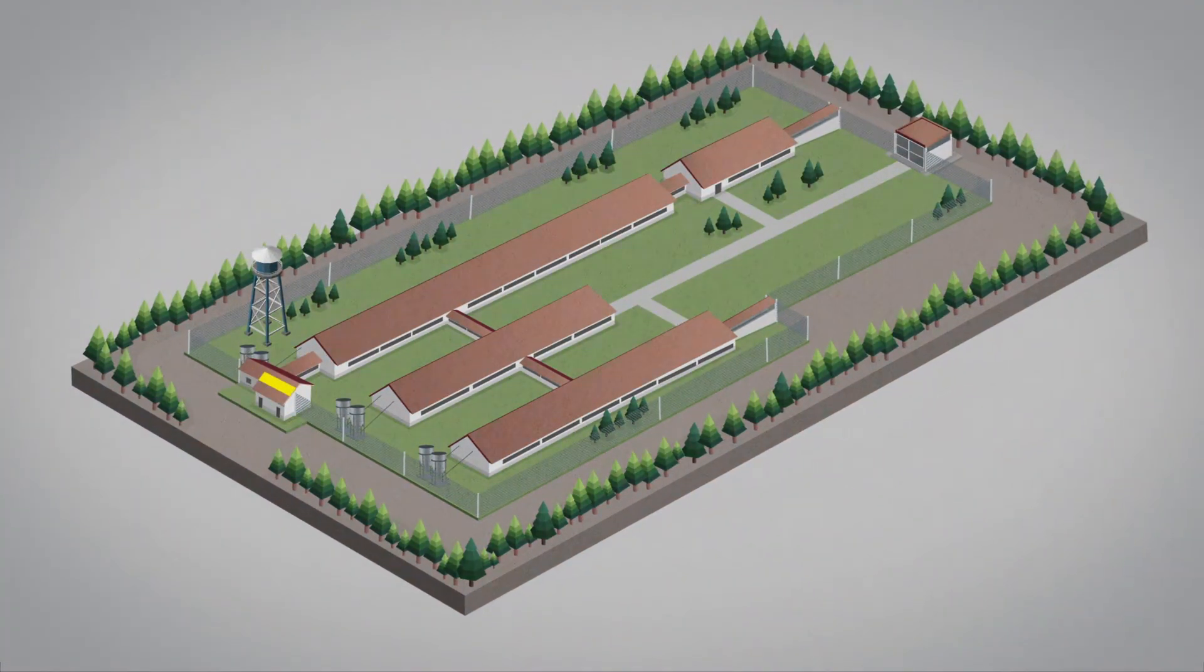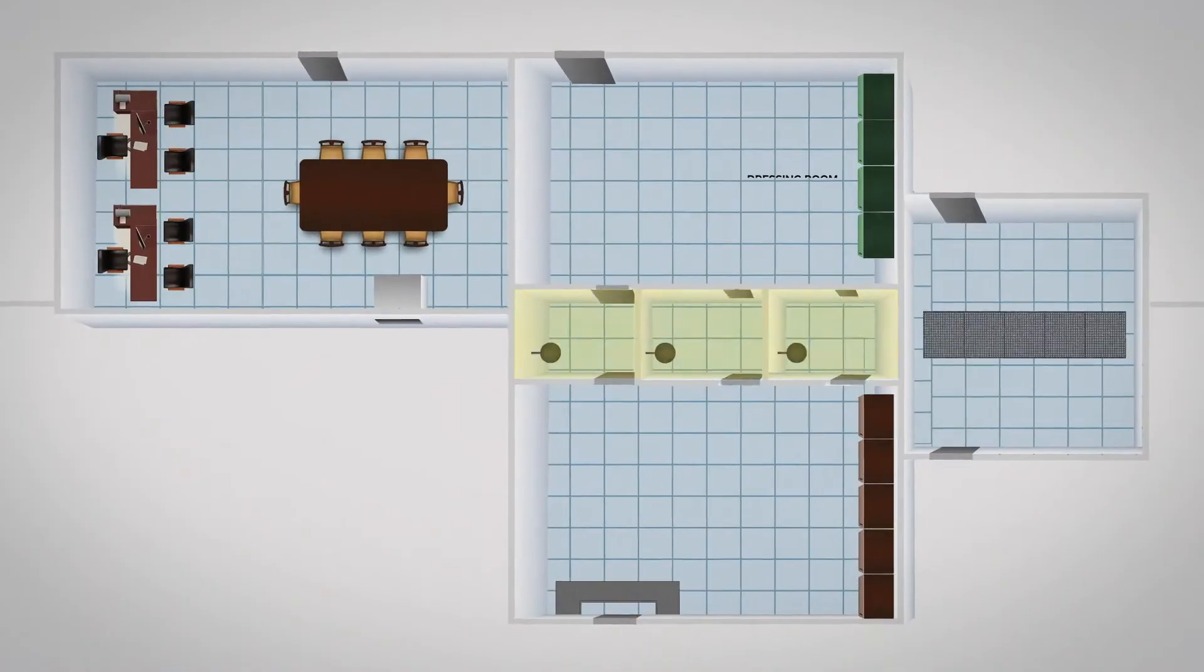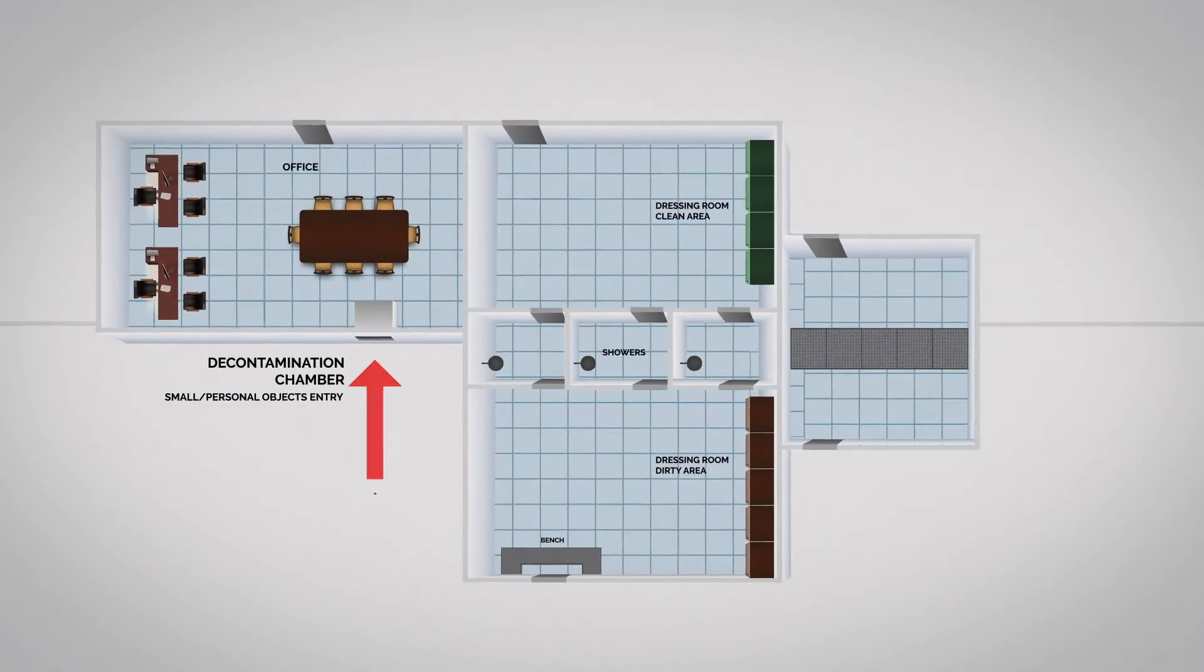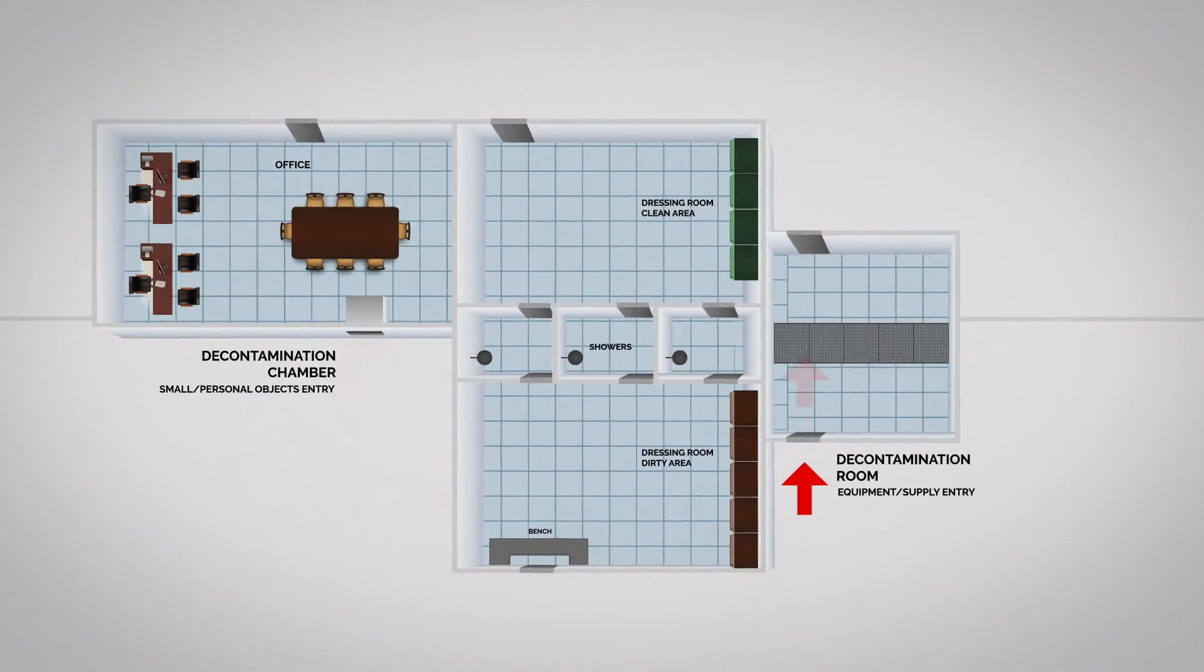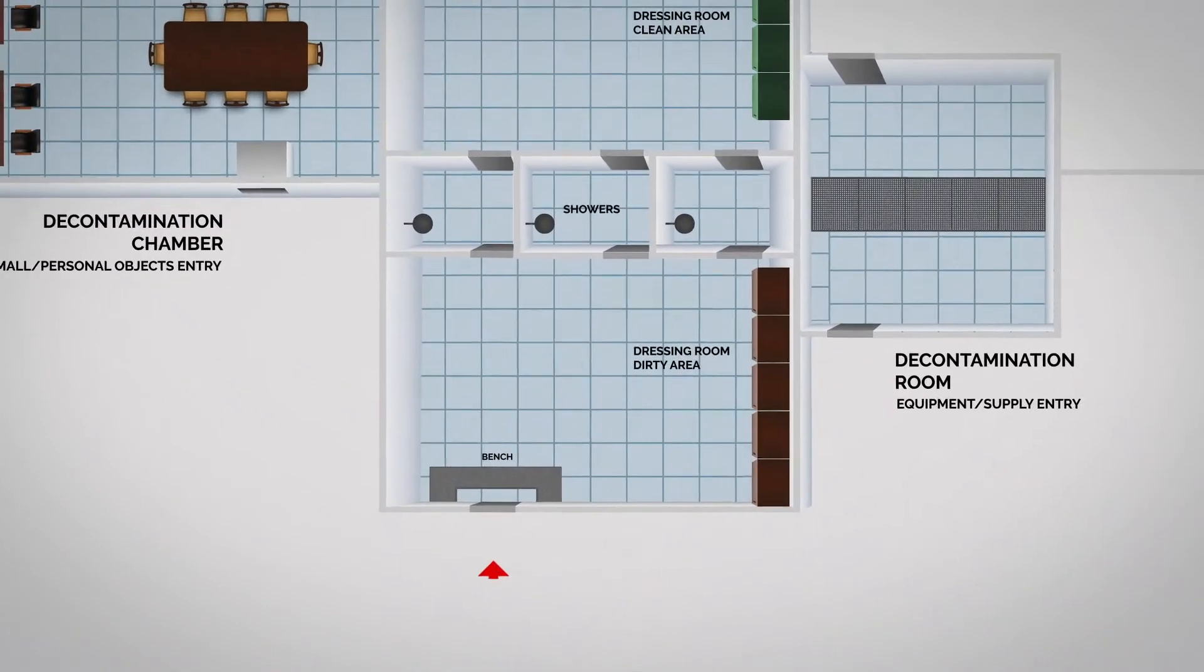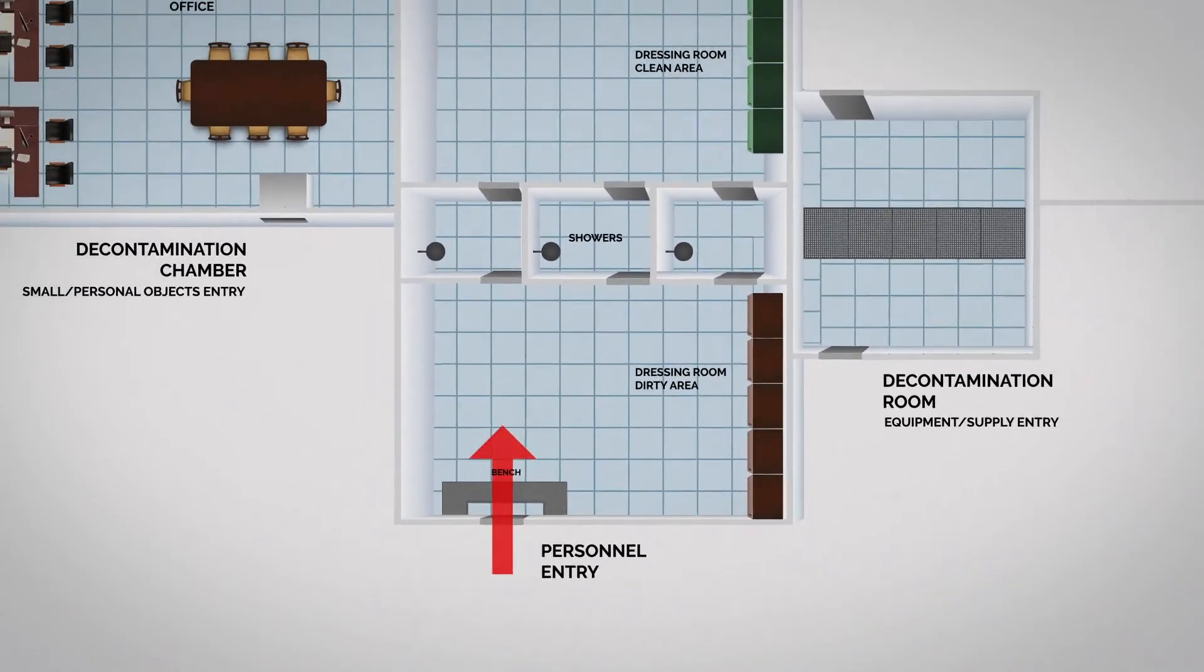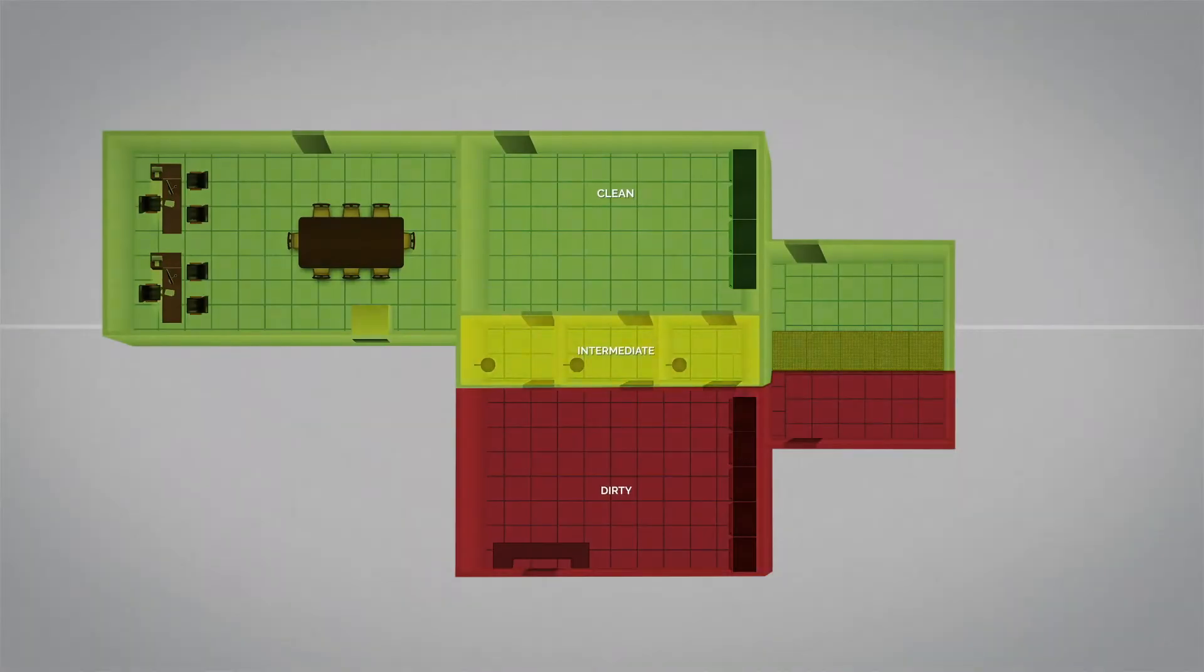The showers, the decontamination room or chamber, a section of the loadout chute, and the mortality extraction points represent the intermediate. This is a space for the decontamination of supplies or equipment that will enter the farm, as well as a transition zone for people and animals between the clean and dirty areas.